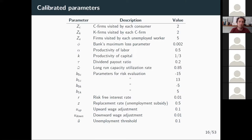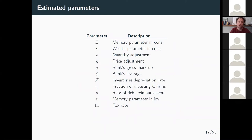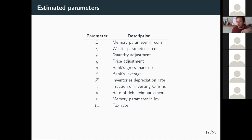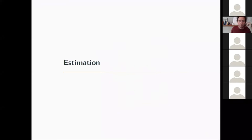We have a set of parameters that are calibrated using external data or past experience, and then we choose a set of parameters mainly concerning behavior: the memory parameter in consumption — part of the permanent consumption equation — a wealth parameter in consumption, quantity adjustment for firms looking at excess demand or supply last period, price adjustment, and so on. The more parameters we can estimate, the better — that's an obvious statement.